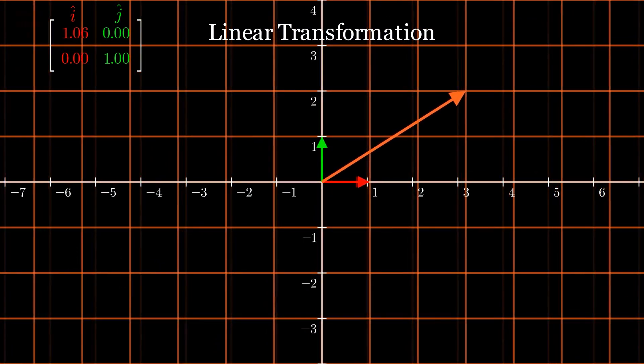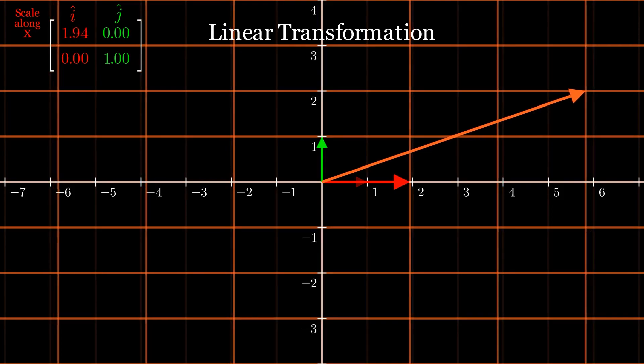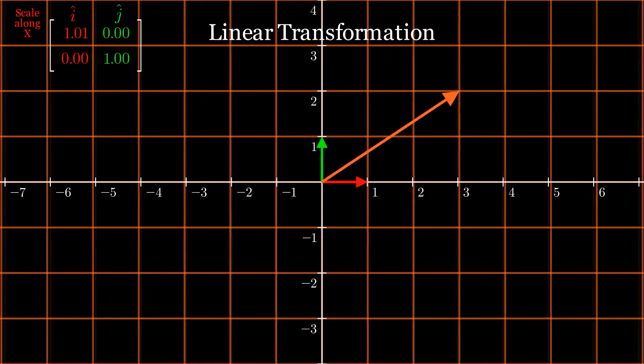If we just pull or push on the vector i-hat along the x-axis, the result is a transformation that scales everything along the x-axis.